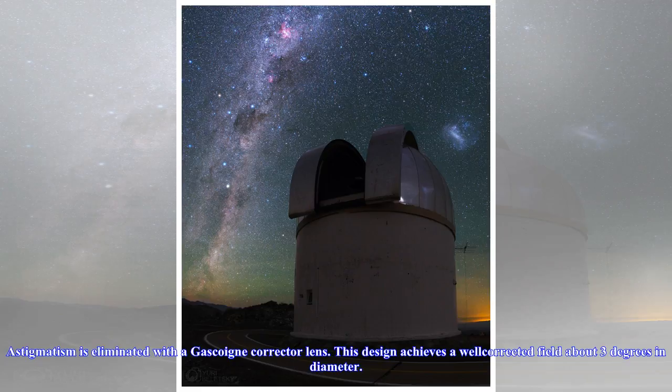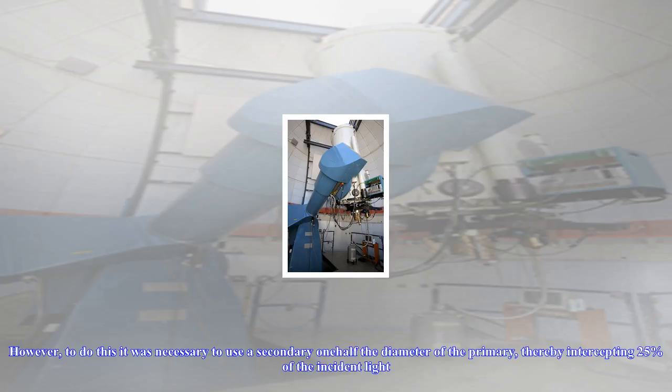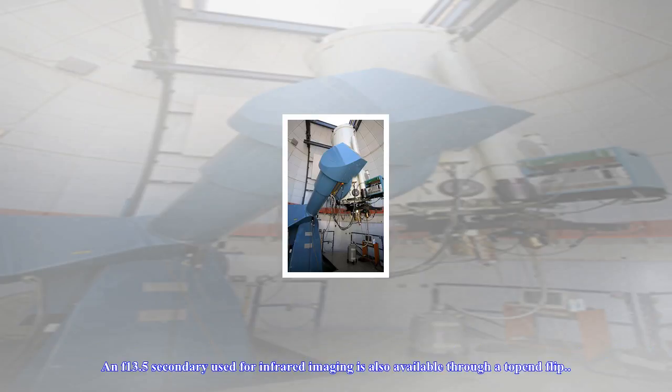Astigmatism is eliminated with the Gascoigne Corrector lens. This design achieves a well-corrected field about 3 degrees in diameter. However, to do this it was necessary to use a secondary one-half the diameter of the primary, thereby intercepting 25% of the incident light.